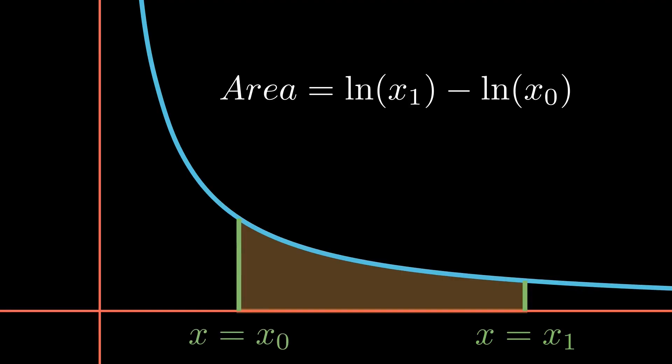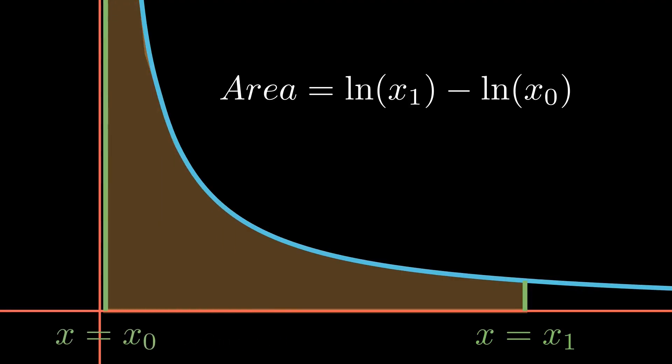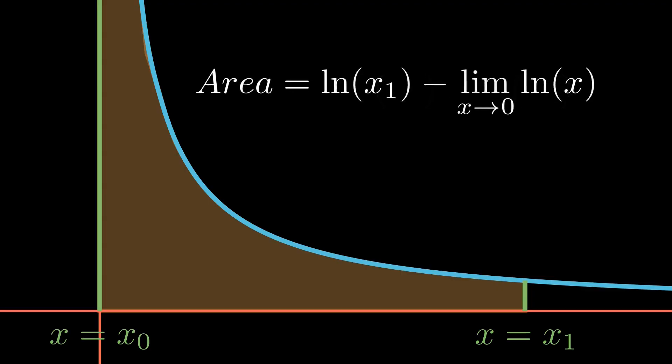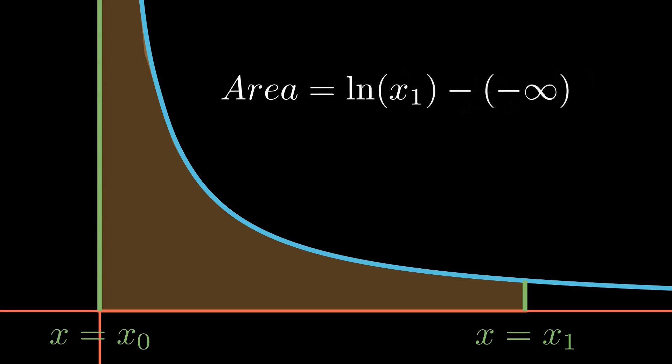We can now do practically the same thing to x0, taking the limit as it goes to 0. Since the natural log of 0 approaches negative infinity, and since subtracting a negative is the equivalent of adding, we likewise conclude that this area is infinite.